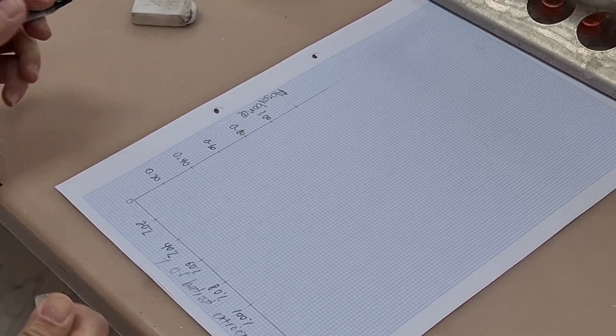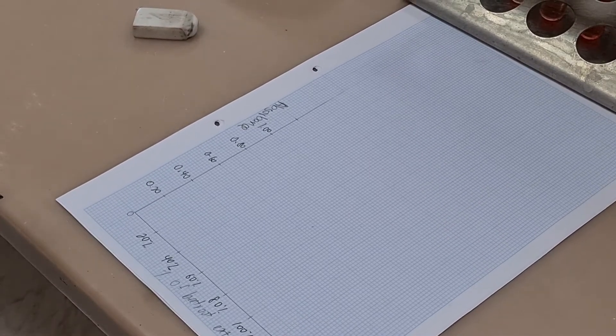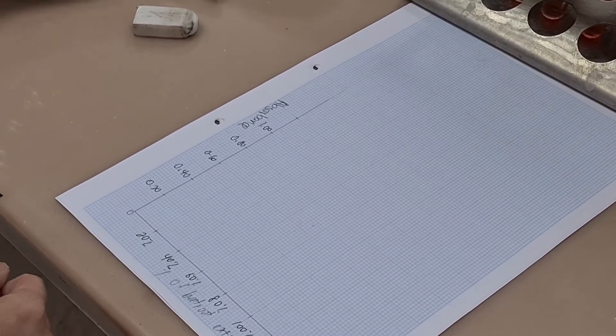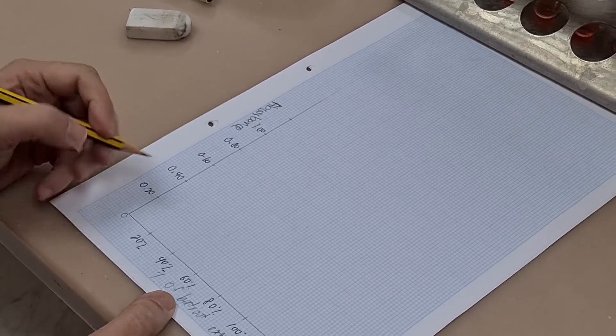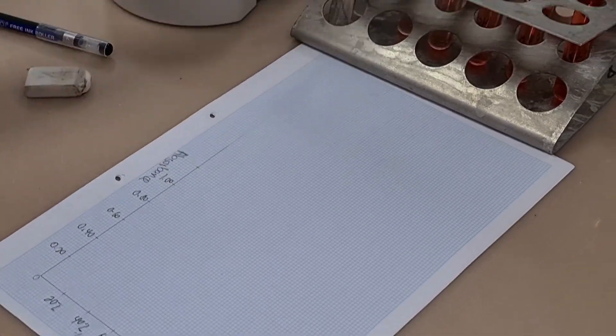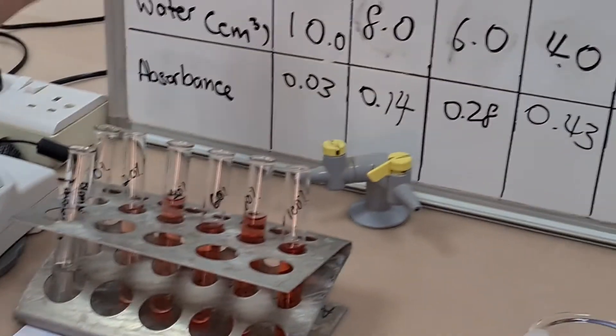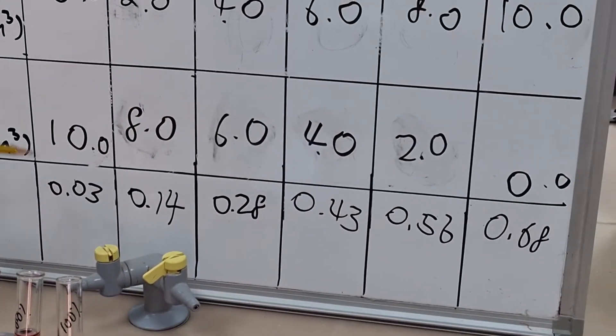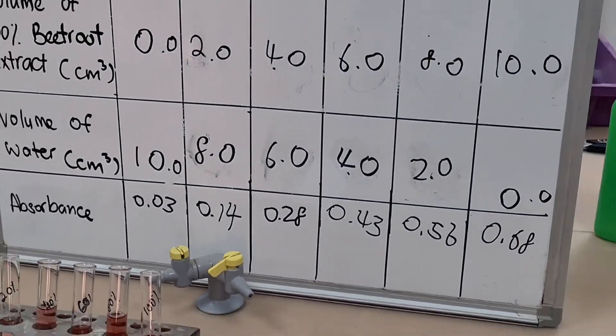And then with our unknown, we measure the absorbance, measure across to our graph to our line and measure down to the x-axis to find the concentration. So here you can see the percentage concentration of beetroot extract is plotted along the x-axis.